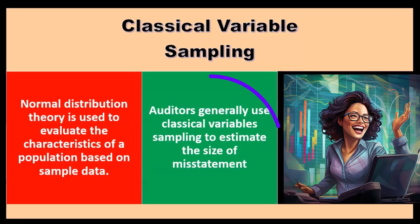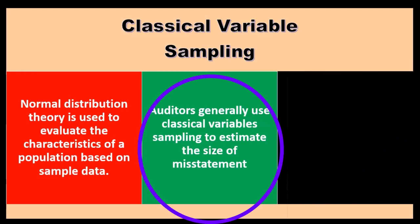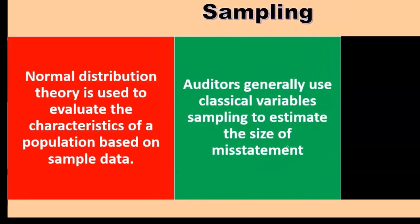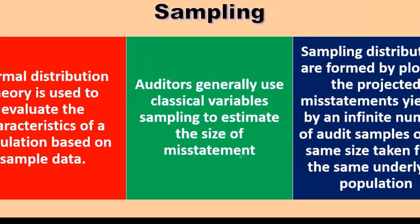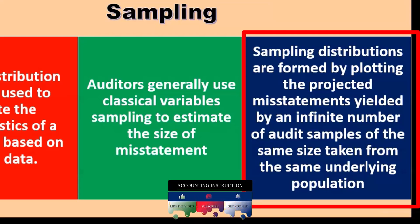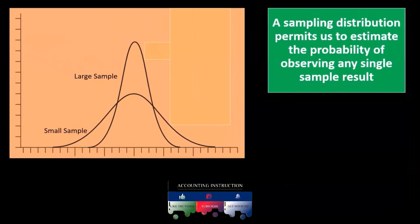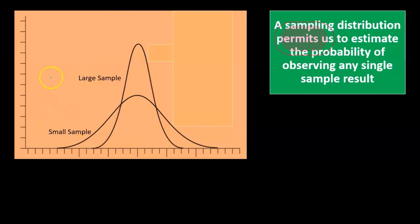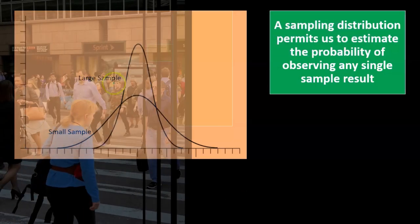Auditors generally use classical variable sampling to estimate the size of misstatements. When classical variable sampling is applied, sampling distributions are formed by plotting the projected misstatements yielded by an infinite number of audit samples of the same size taken from the same underlying population. This produces the standard distribution-type curve.